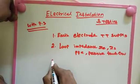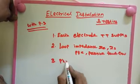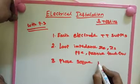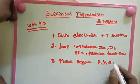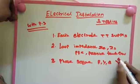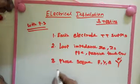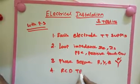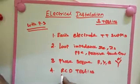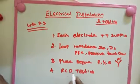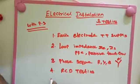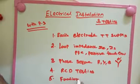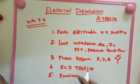And then third one is phase sequence we need to check. And then fourth one is RCD testing, that means residual current device testing. After that we need to check final testing, that means functional testing.